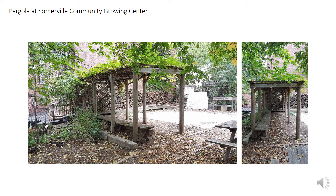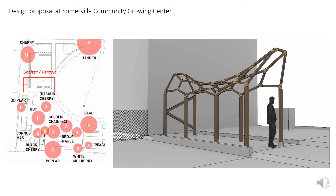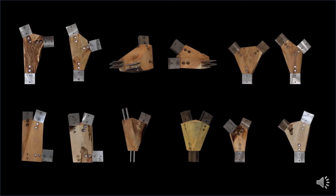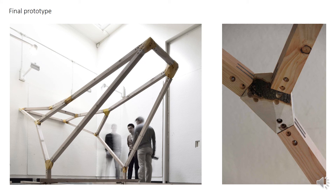We found a partner in the Somerville Community Growing Center, which was under renovation and presented us with an old pergola. Several trees that were felled during the renovation provided us with a material library and the opportunity to rebuild the structure using material from the construction site and existing foundations and columns. We designed a mock-up using eight crotches with a valency of three and four crotches with a valency of four, and produced them using our setup to erect the structure at MIT and test our building system.